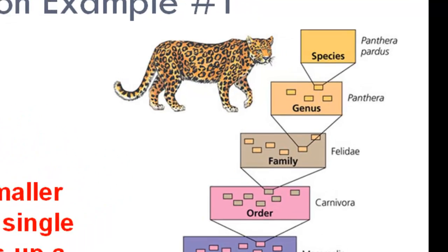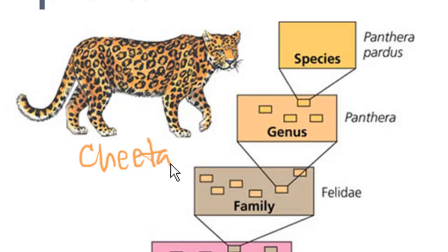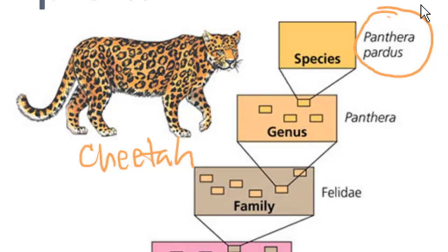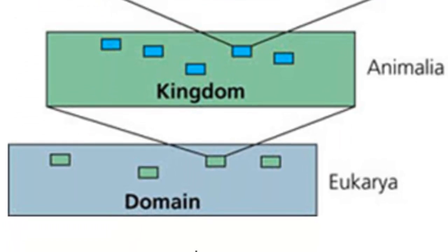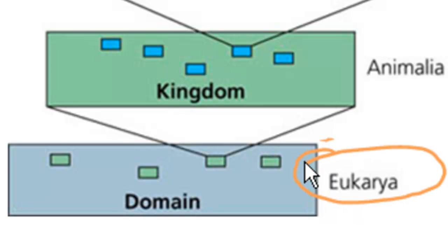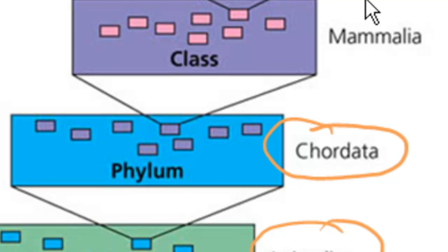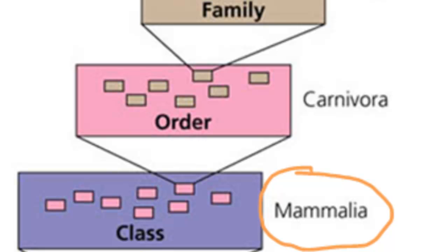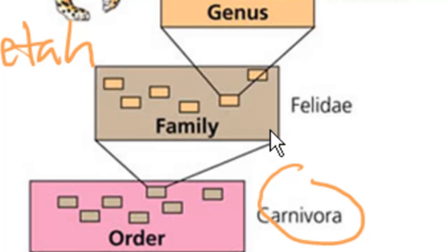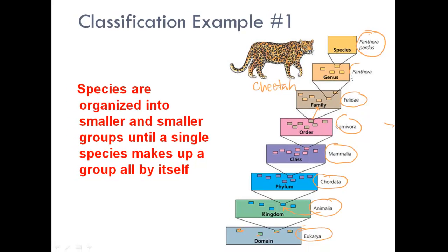Let me show you an example using a cheetah. Starting with the scientific name, Panthera pardus — all living things have a specific scientific name so there's no confusion. Using our mnemonic, domains are at the bottom: the cheetah belongs to the domain Eukarya. Within that, it belongs to the kingdom Animalia. Its phylum is Chordata, meaning it has a backbone. It belongs to the class Mammalia, giving live birth; the order Carnivora; the family Felidae; and the genus Panthera.